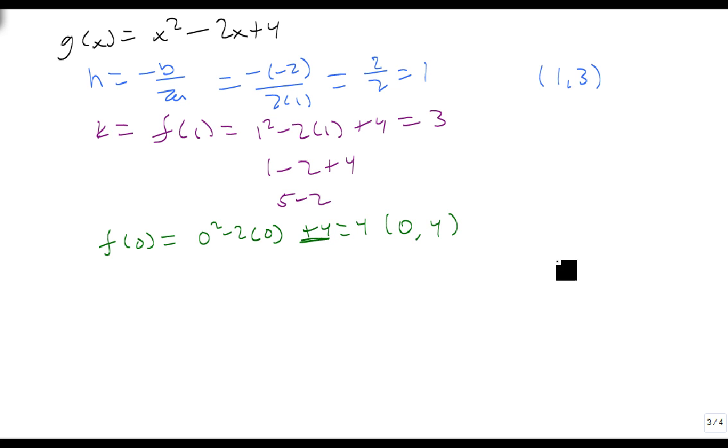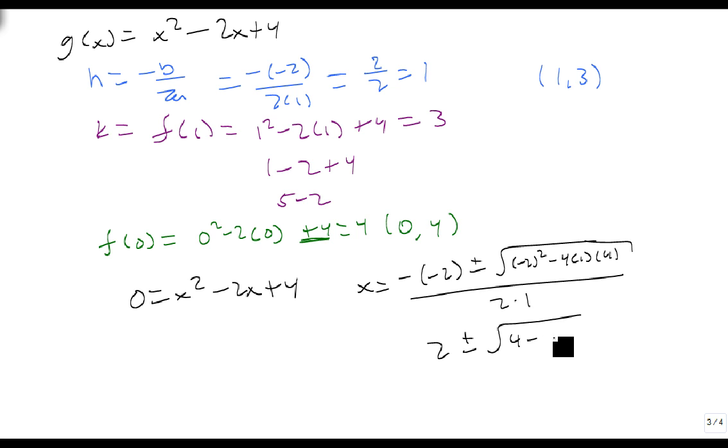But when we go to solve this one, we need the quadratic formula. So we're going to let x equal, because remember we're solving 0 equals x squared minus 2x plus 4. So we're going to let x equal minus a minus 2 plus or minus the square root of minus 2 squared minus 4 times 1 times 4, all over 2 times 1. This is going to be 2 plus or minus the square root of 4 minus 16 over 2. Notice this becomes 2 plus or minus the square root of minus 12 over 2, and I can actually stop right here, because remember that the square root of a negative number is an imaginary number, and you can't graph an imaginary number on a real number line.